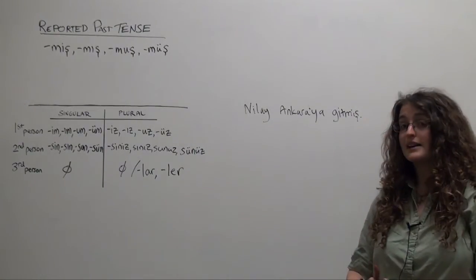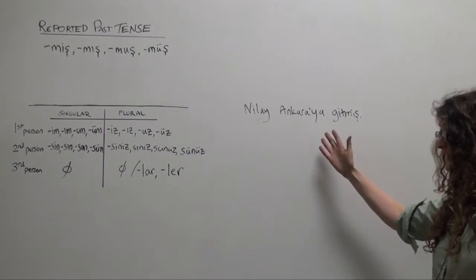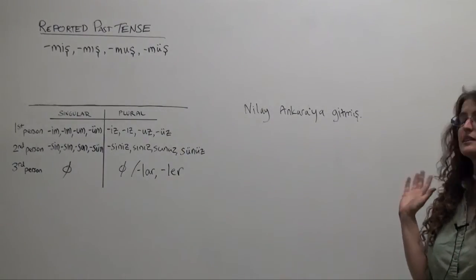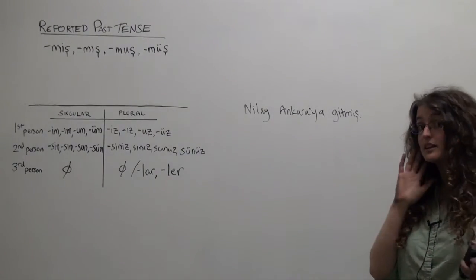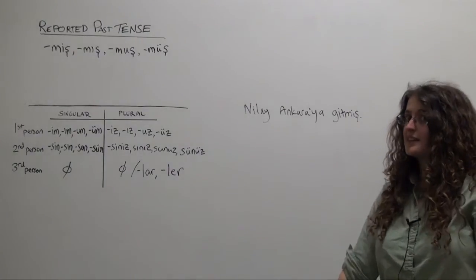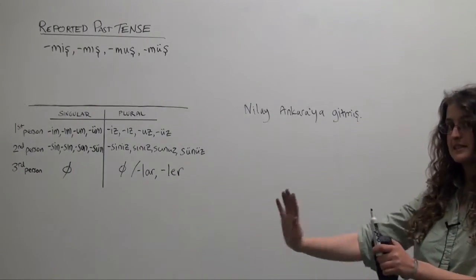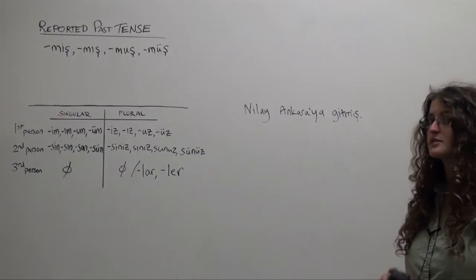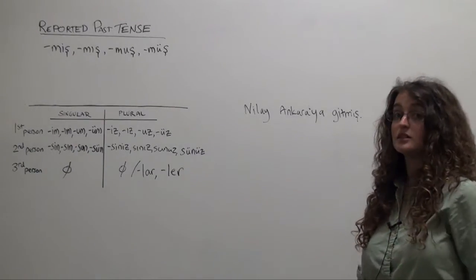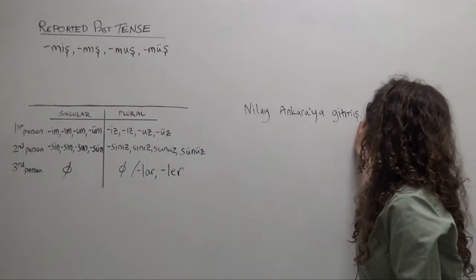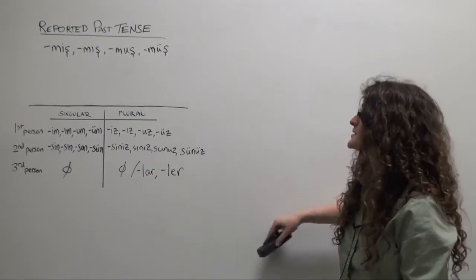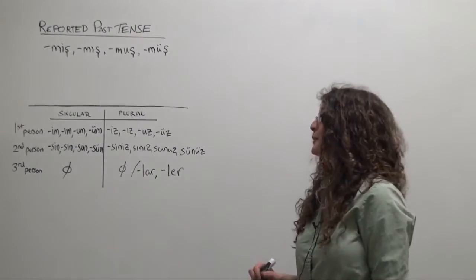Now we can translate the reported past tense into English in a case like this as: Apparently Nilay went to Ankara. I've heard that Nilay went to Ankara. It's said that Nilay went to Ankara, but you're distancing yourself from the event. You're not absolutely certain. That's why it's sometimes called dubitative. But we'll call it the reported past tense. Let's see how to form it. It's actually quite simple.